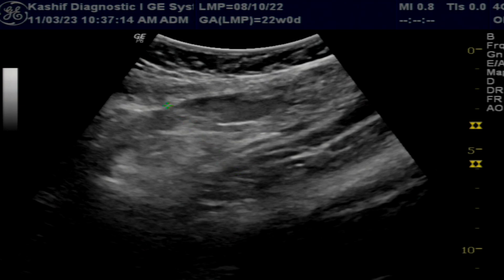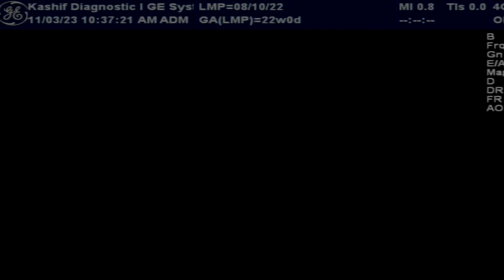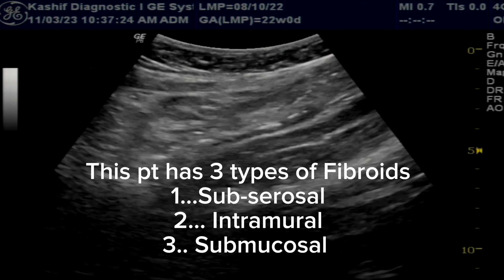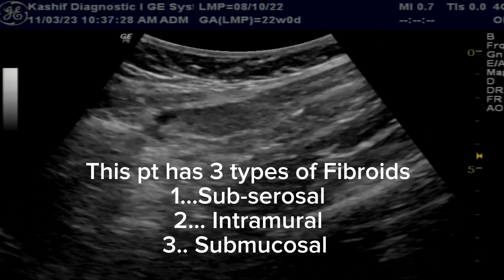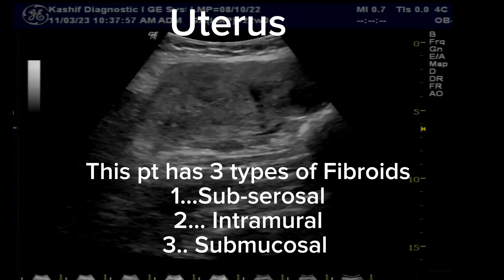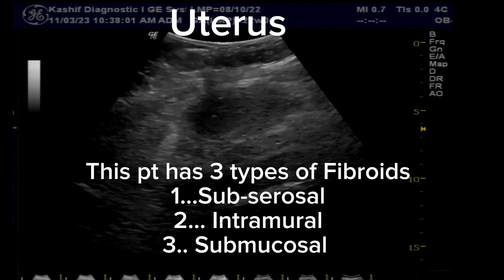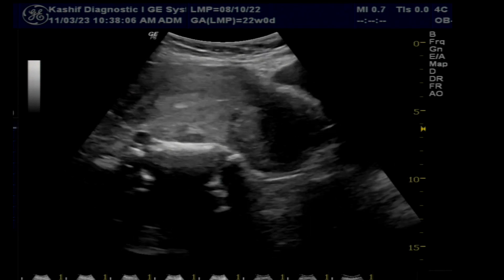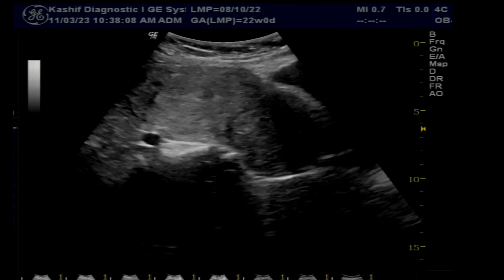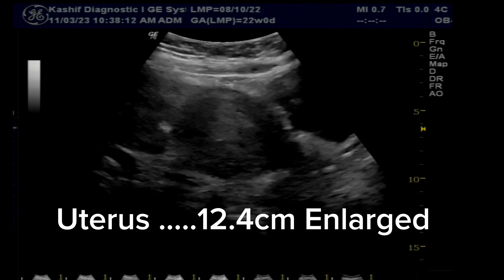This is a Day 13 scan and there are no prominent or growing follicles seen. It is observed that many patients with multiple fibroids have small follicles and some hormonal imbalance, possibly due to stress and the long hormonal treatments the patient has undergone.